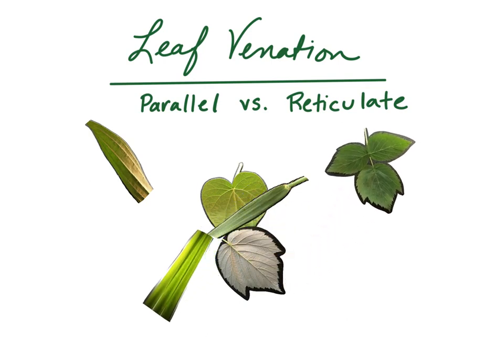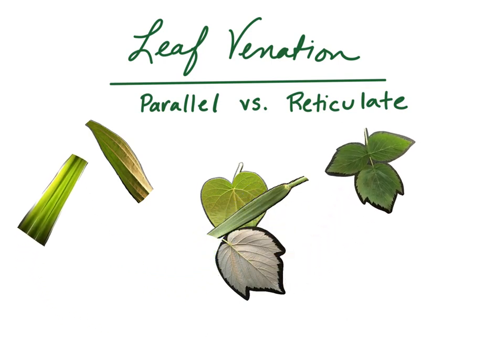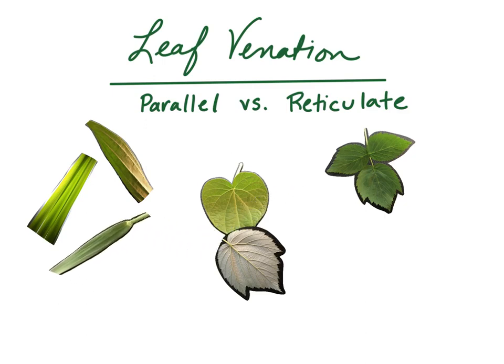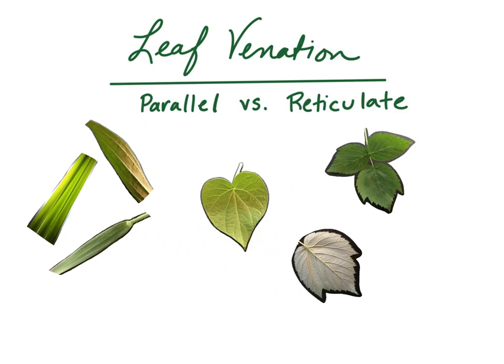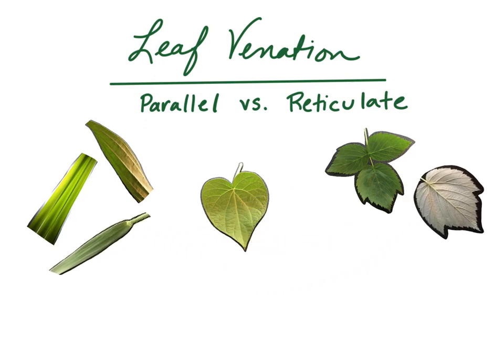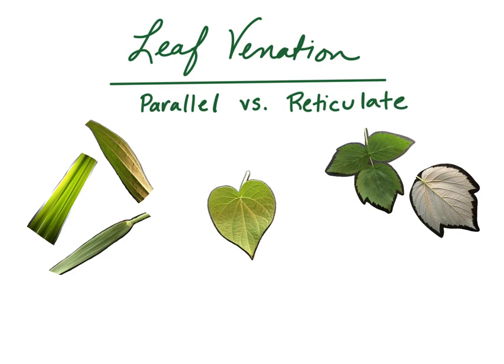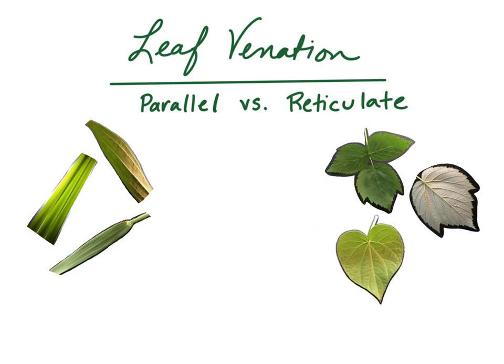Leaves with a parallel pattern have lines running straight across, side by side. Leaves with reticulate patterns have lines that form networks, like a web.